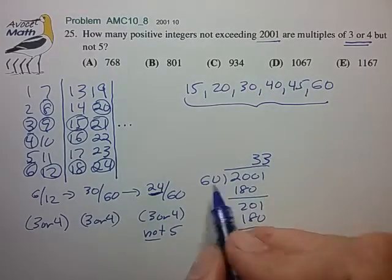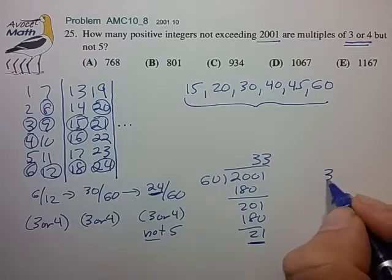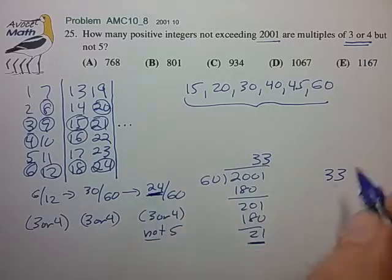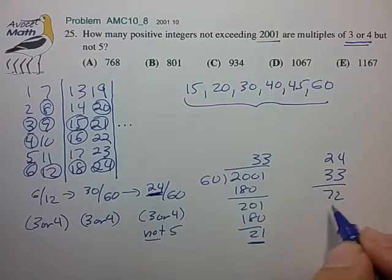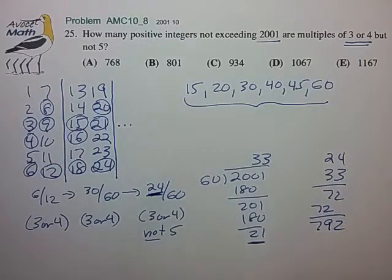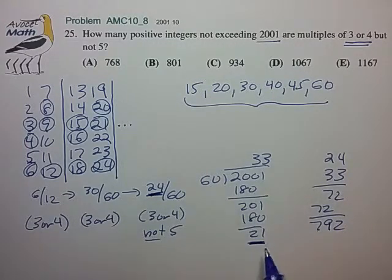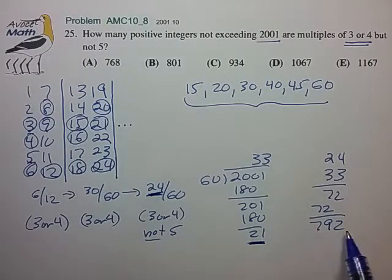So essentially we have 33 blocks of 60 with a remainder of 21. And so if we multiply 33 times the 24, we have 72, 72, 792 for those blocks of 60. So already we can tell that the answer is probably B because we have counted 792 out of the complete blocks of 60. We still have to add the stragglers in our remaining set of 21 remainders. But already we can see we're very close to 801, and that's probably the right answer.